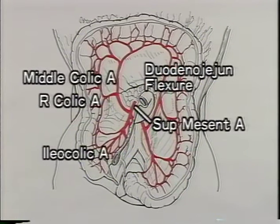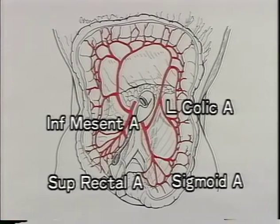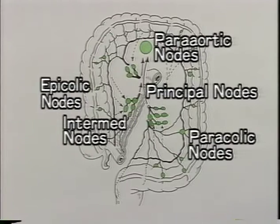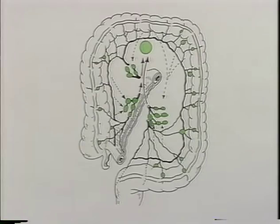Generally speaking, lymphatics run along arteries. This shows the superior mesenteric artery and its supply area, and here is the inferior mesenteric artery and its supply area. Note the numerous arteries which anastomose to form an artery parallel to the colon — this is called the marginal artery. Near the colon, thin lymphatics first converge at the epi or paracolic nodes, which lie along the marginal artery. These then form a chain, including the intermediate nodes and reaching the principal nodes. Finally, the lymphatics converge at the paraaortic nodes.